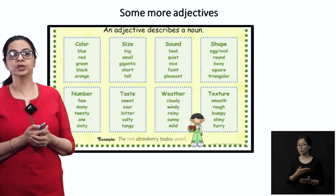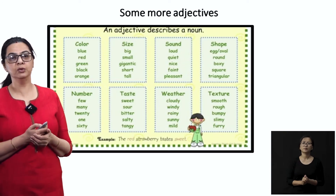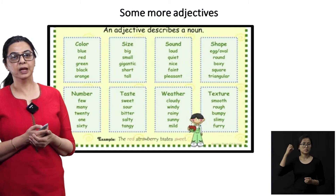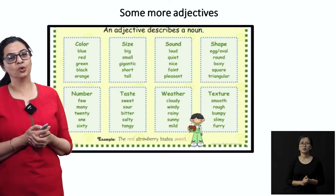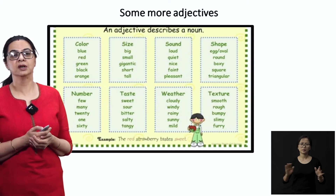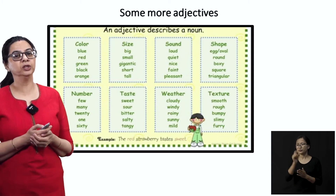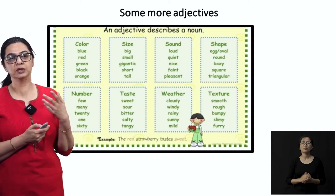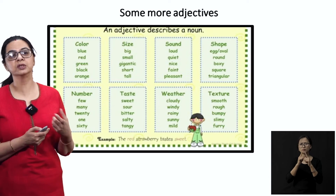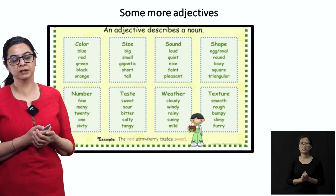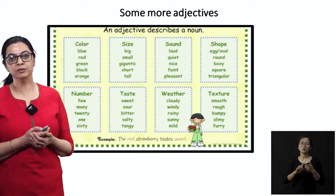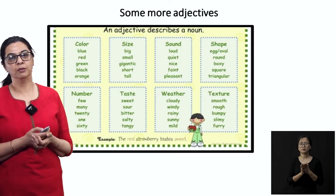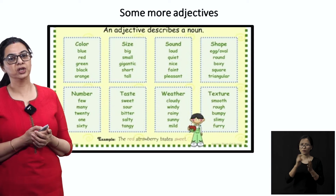If you wanted to describe a kind of sound, sound can be loud, quiet, nice, faint, or pleasant — so all these five words are your adjectives, and you can use them while writing, talking, or in a sentence. Now shape: egg or oval means the same thing. Round, boxy, square, triangle — so all these kinds of shapes, if you are describing something, these shapes are your adjectives.